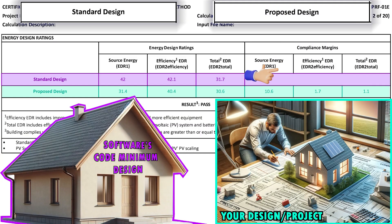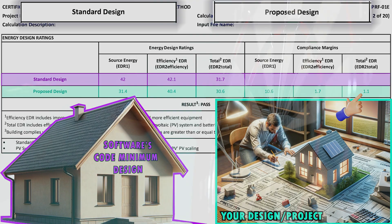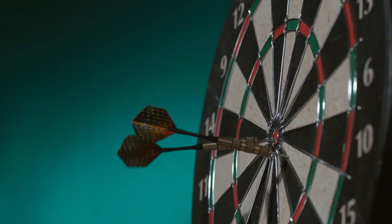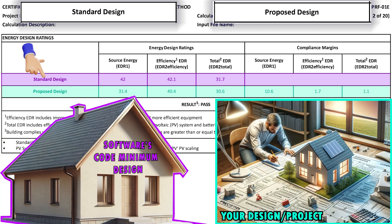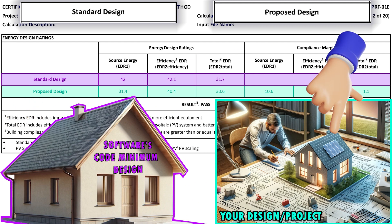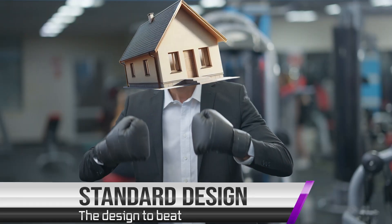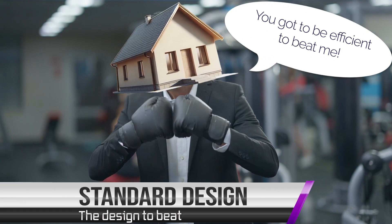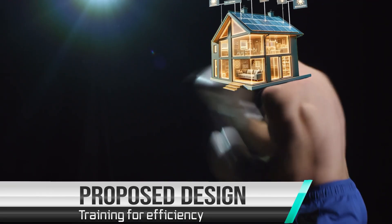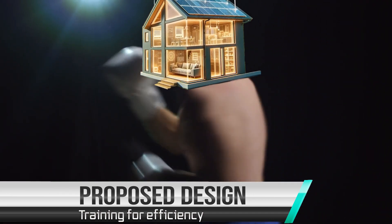In the compliance margin section, positive numbers or zeros indicate that your design meets or even exceeds energy efficiency standards, which is the goal. You'll notice the standard design doesn't have entries in the compliance margin columns because the standard design is a reference point for your project. It's a hypothetical model generated by the energy software, whose sole purpose is to establish the energy usage limit your actual design needs to meet or improve upon.